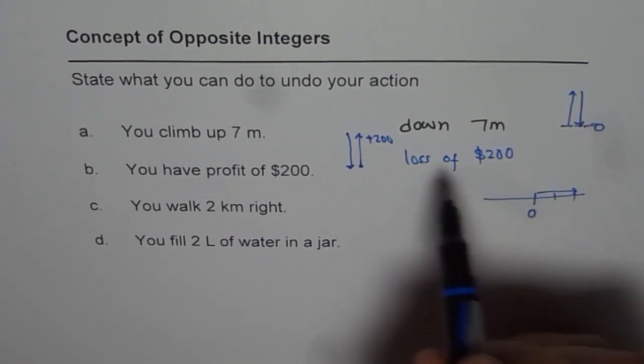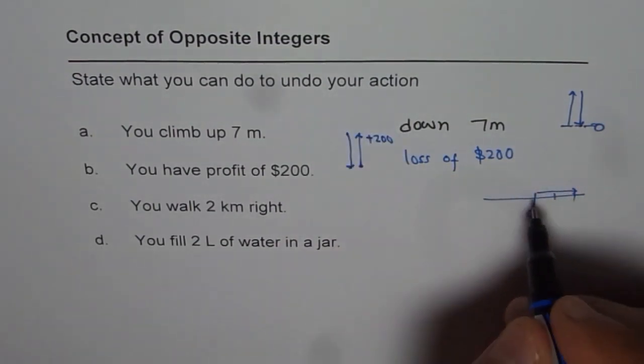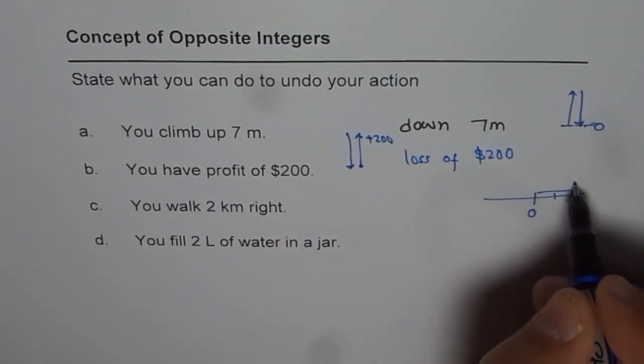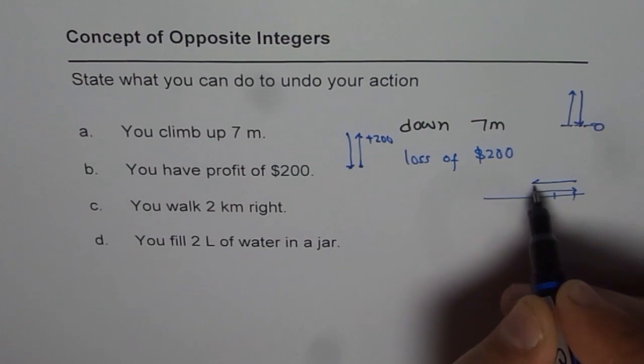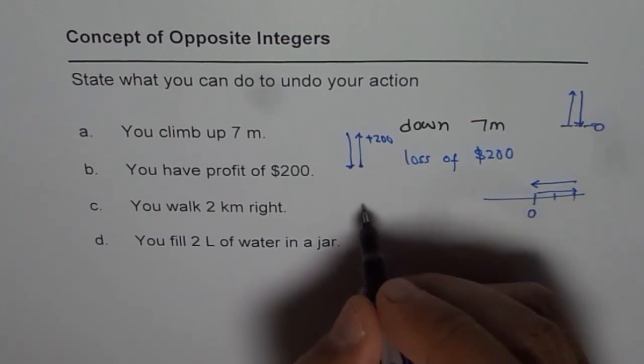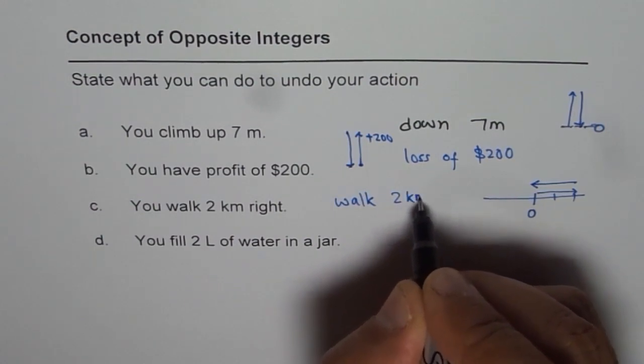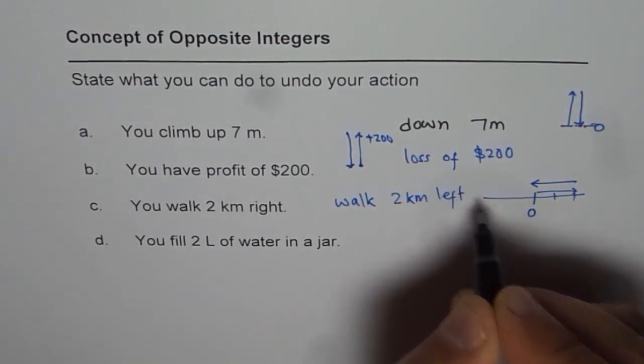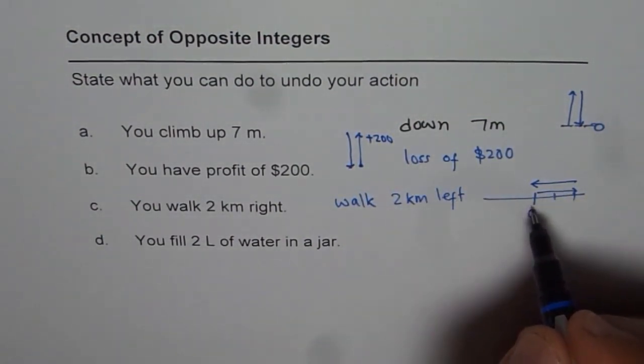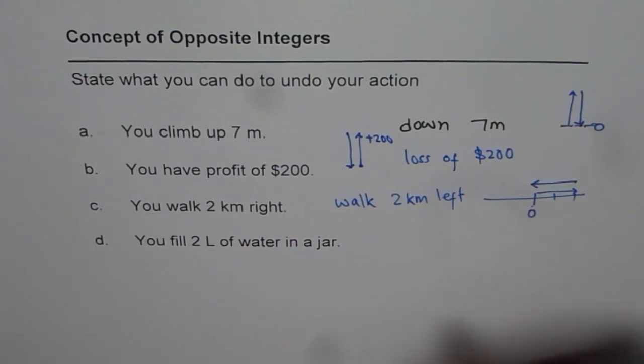Now what should you do to undo your action? That means to come back to your starting point, you have to walk 2 kilometers left. You know the result - you come at the starting point.